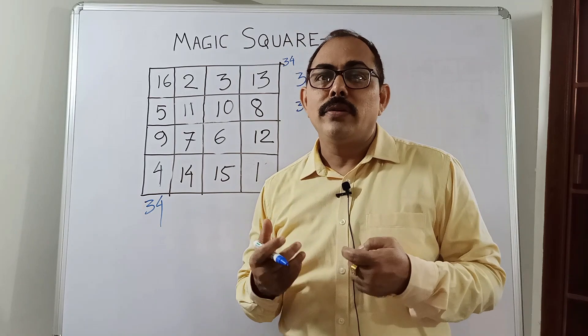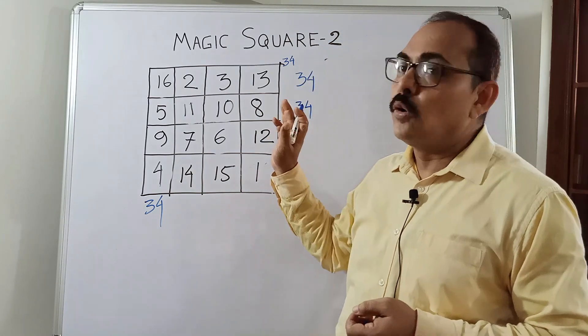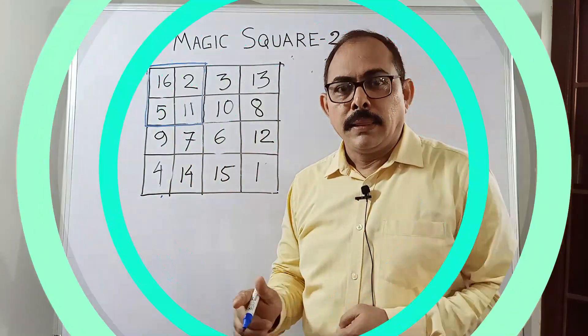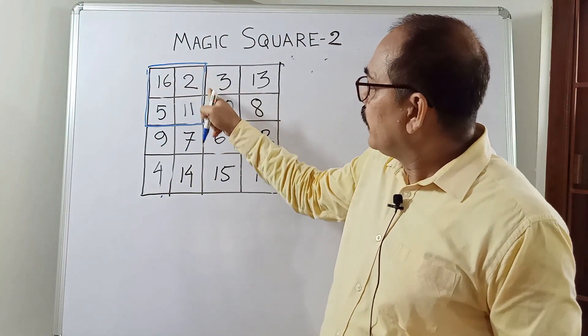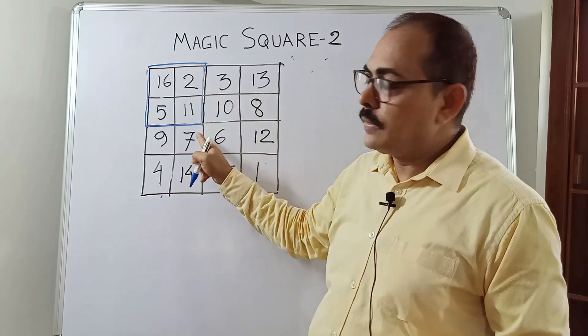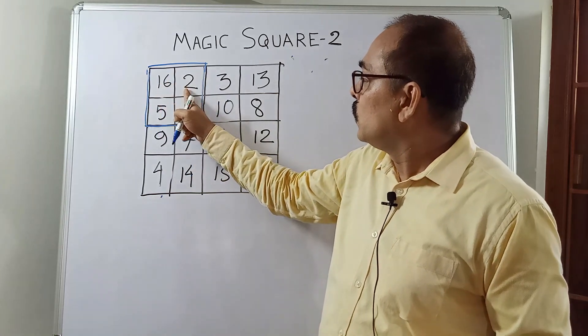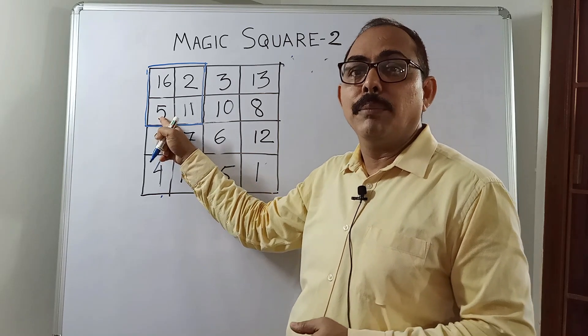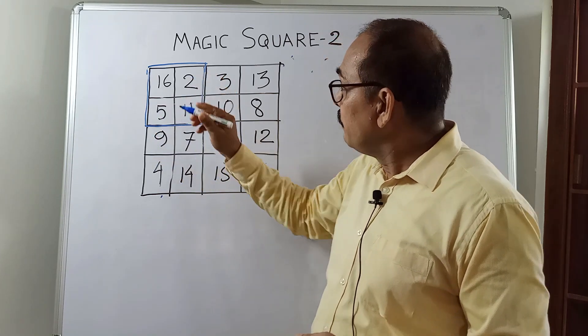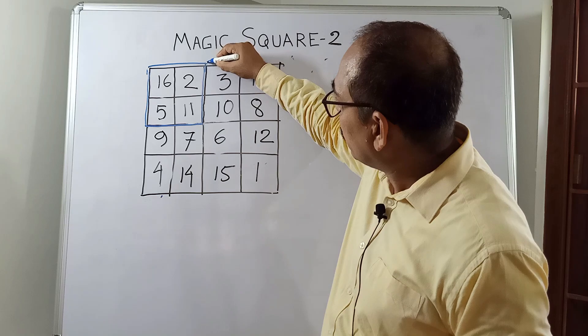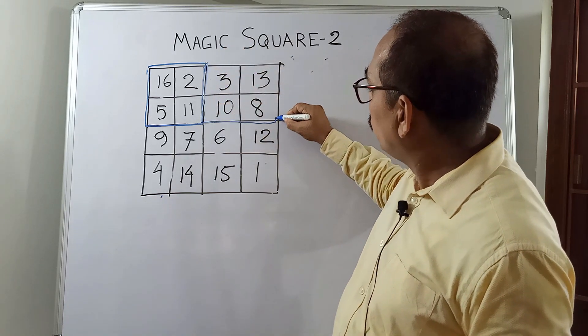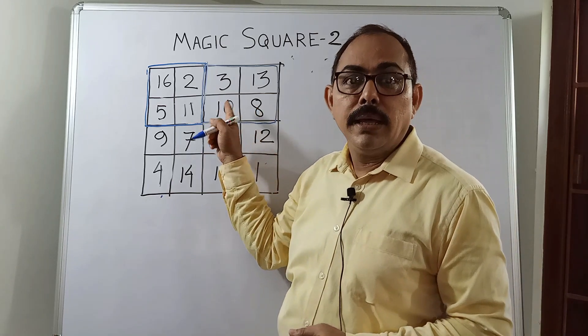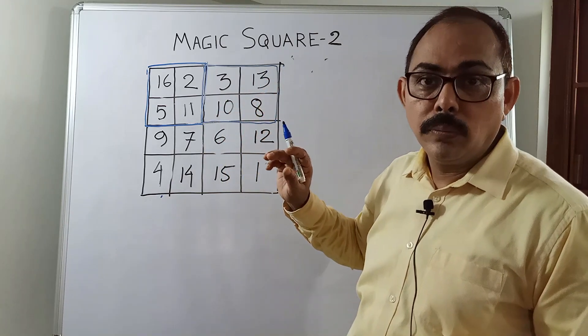But there is one more interesting property in a 4 by 4 magic square. What is the property? Let us see. Here you see, I have taken these four numbers. 16 plus 2 plus 11 plus 5. You see, here also, the sum is coming 34. The same thing will happen here. If you take these four numbers, 3, 13, 8, and 10, their sum will also be 34.